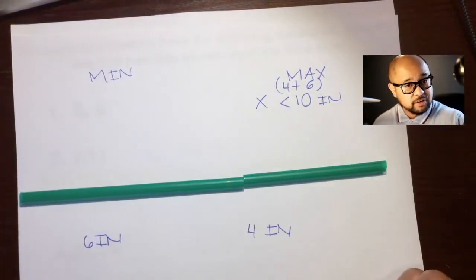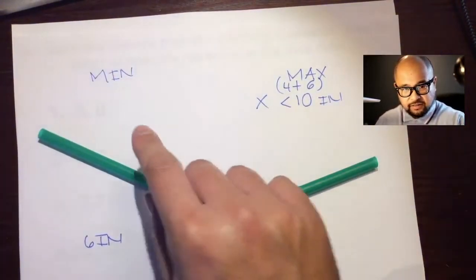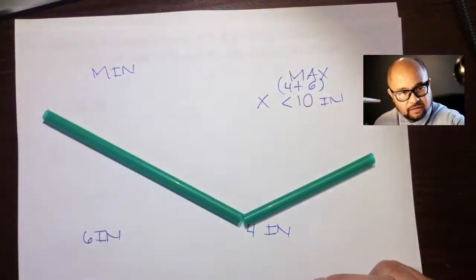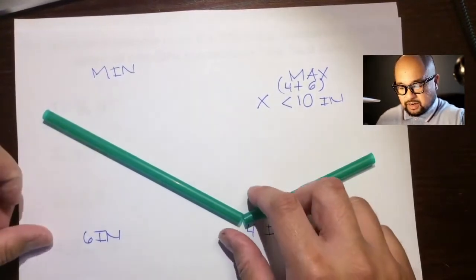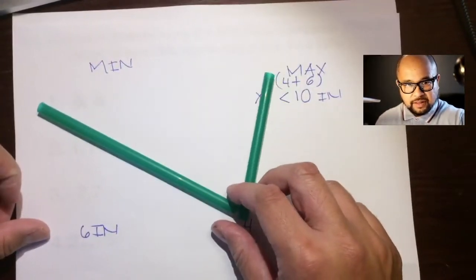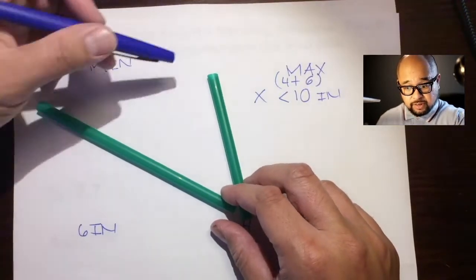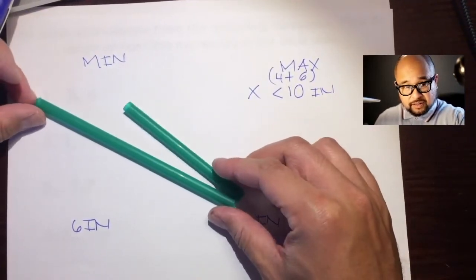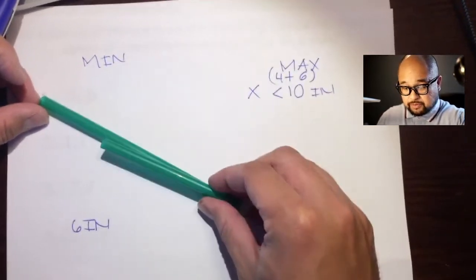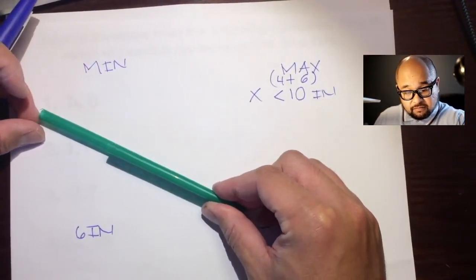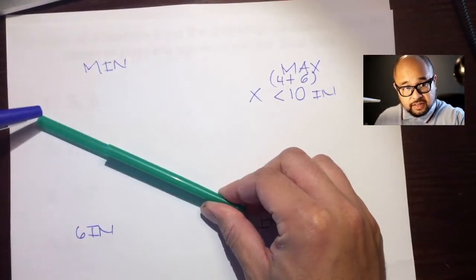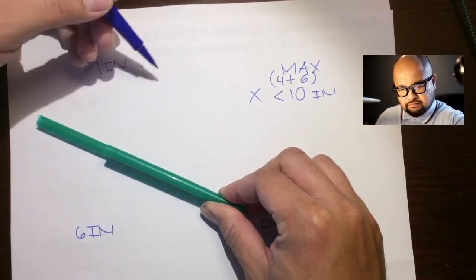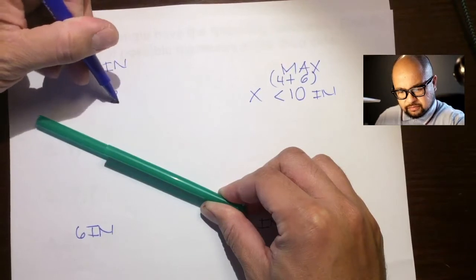Now the question is, what's the minimum this third side can be? Well, let's make this angle smaller — let's make it narrower. As we make it narrower, that third side gets shorter and shorter. How short can we make it? Let's make it so that these lines are pretty much on top of each other. Now what's the length from here to here? Well, if the long straw is 6 and the short straw is 4, the length from here to here would be 2.